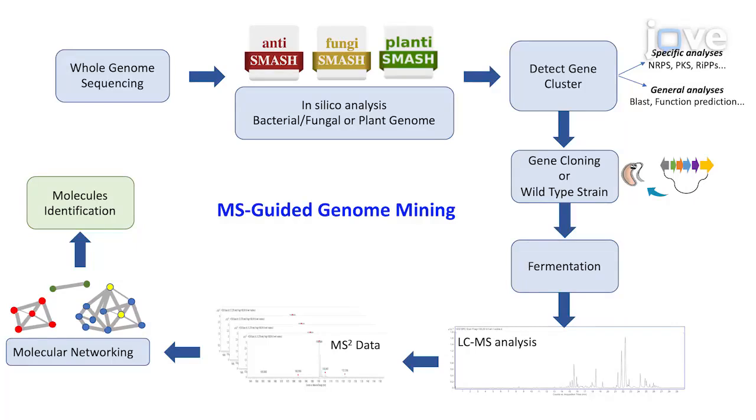Mass spectrometry guided genome mining is a versatile method to gain structural information of several chemotypes contained in a large amount of data from a crude extract simultaneously.